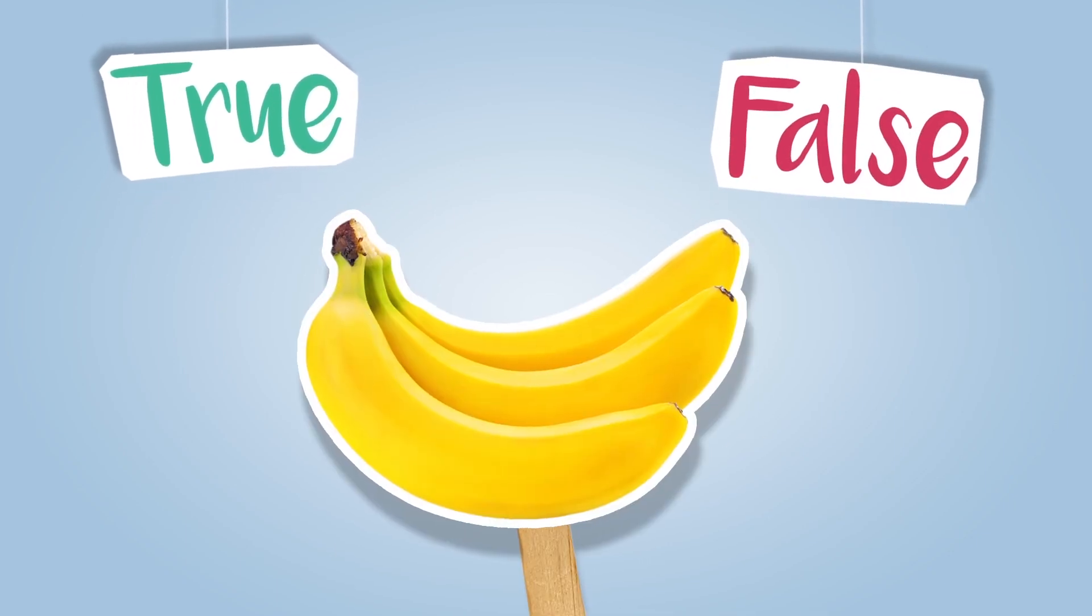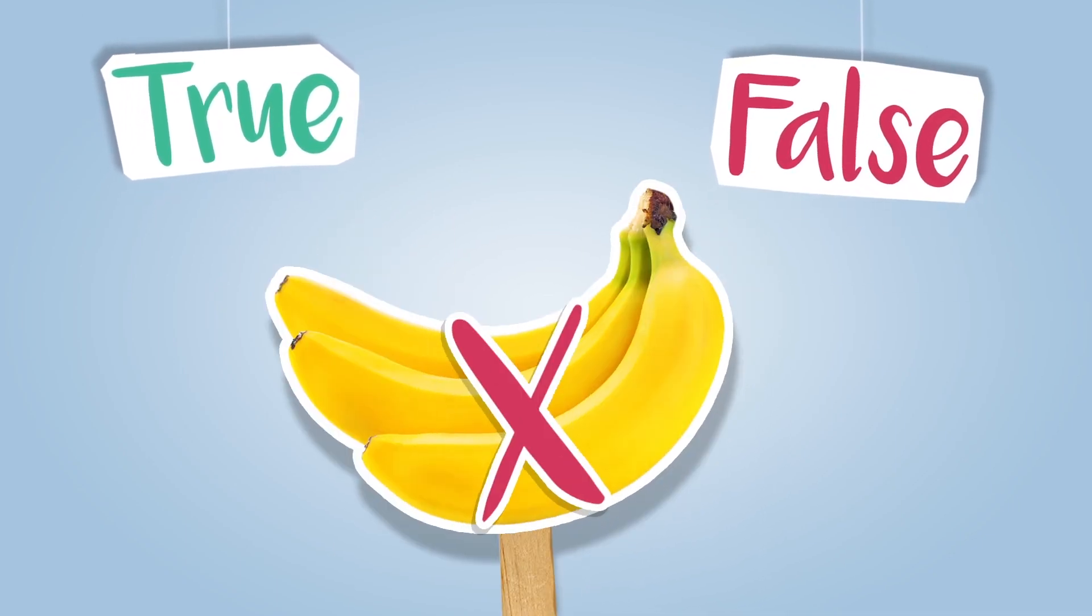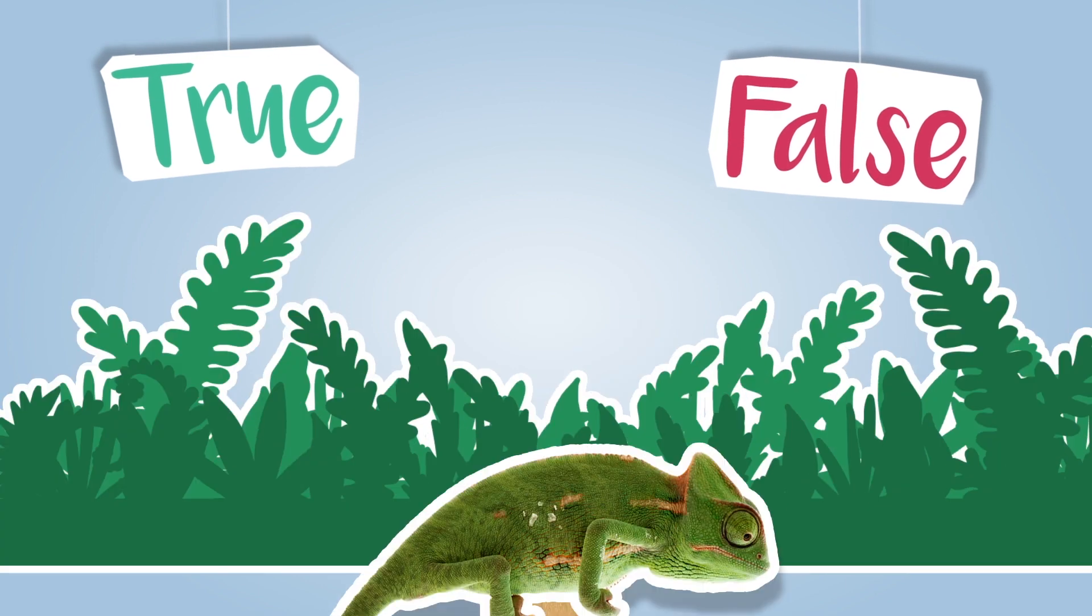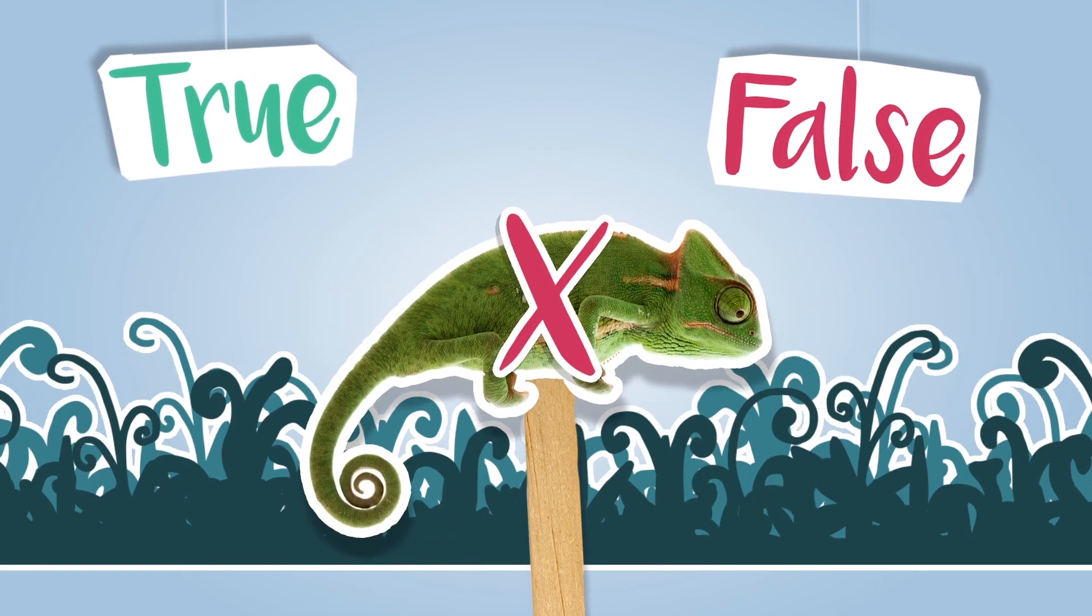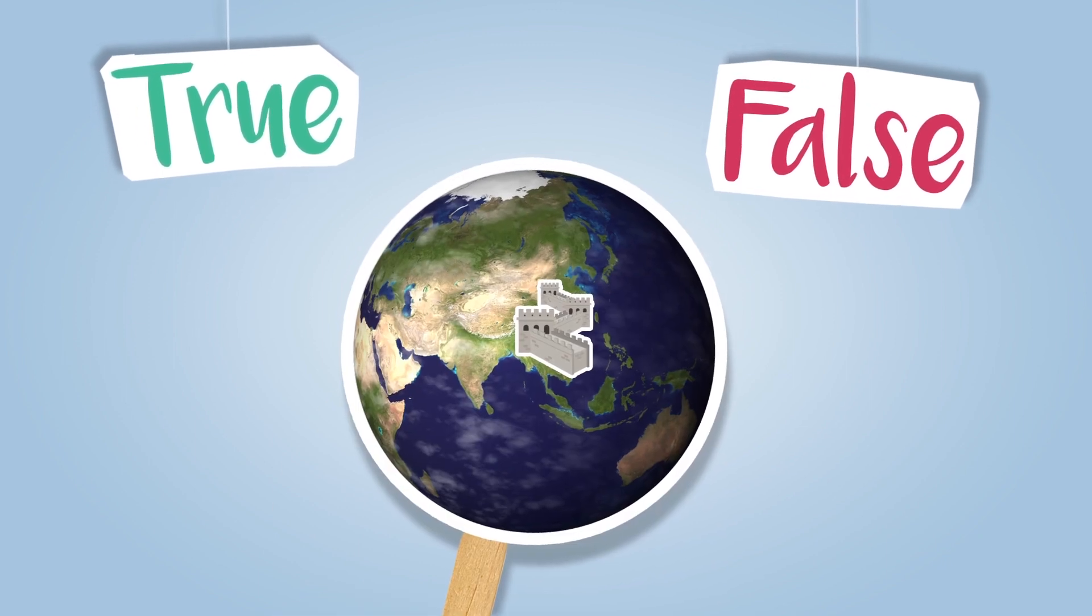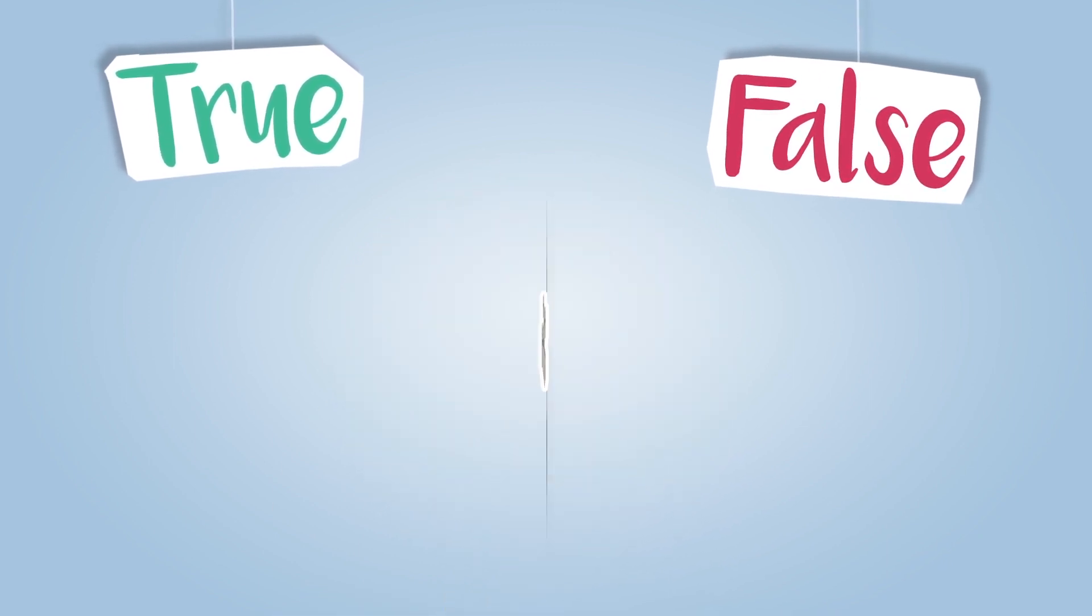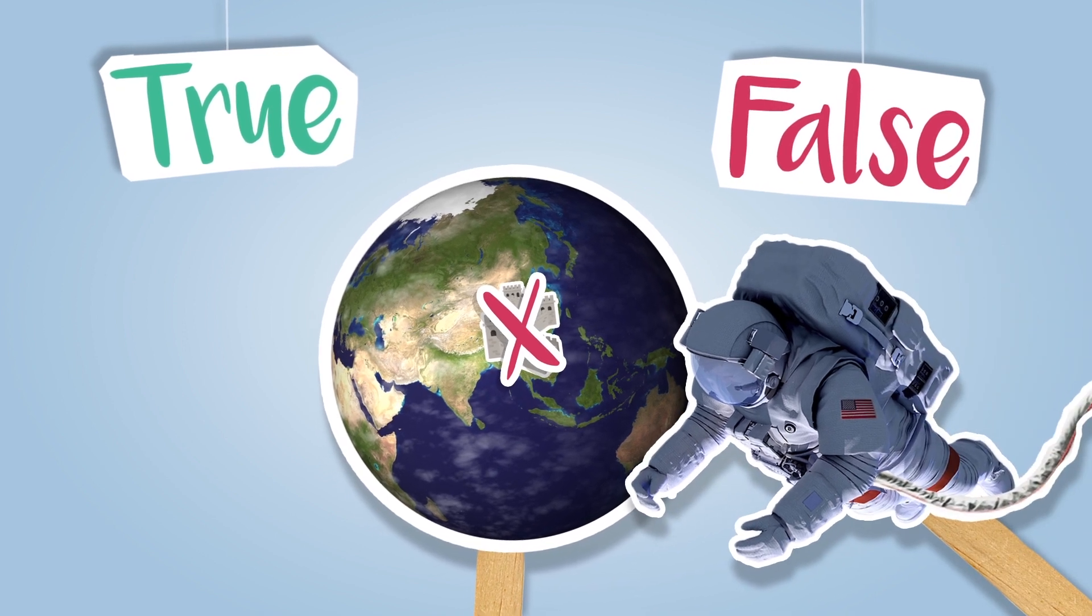True or False? Bananas grow on trees. True! True or False? Chameleons change their color to match their environments. True! True or False? The Great Wall of China can be seen from space. True! Uh, Houston, we have a problem.